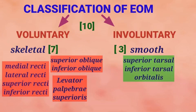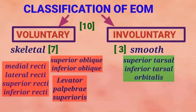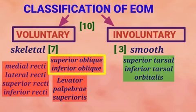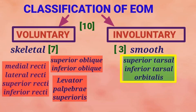EOM is classified into two categories: voluntary muscles and involuntary muscles. There are a total of 10 extraocular muscles. Among the 10 muscles, 7 are voluntary and 3 are involuntary. The voluntary muscles are skeletal in nature and include 4 recti muscles — superior rectus, inferior rectus, medial rectus, and lateral rectus — 2 oblique muscles — superior oblique and inferior oblique — and 1 levator palpebrae superioris. The 3 involuntary muscles are smooth muscle in type: 2 tarsal muscles — superior tarsal and inferior tarsal — and 1 orbitalis muscle, which is inconspicuous and whose function is not known.